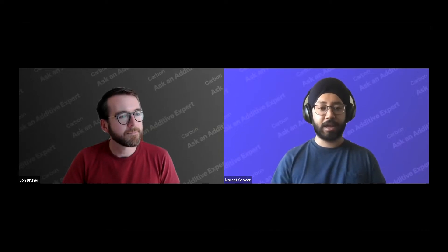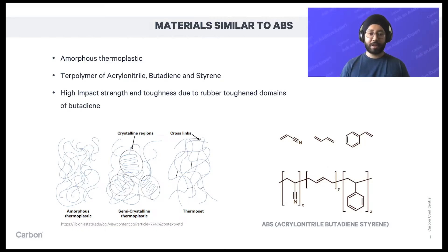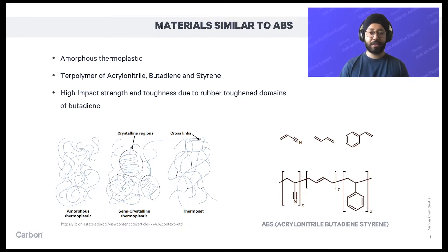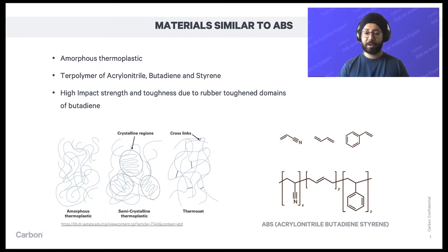ABS comes from the family of polymers known as amorphous thermoplastics. If you look at the screen, amorphous thermoplastics are basically long chains of polymers — essentially like a full bowl of spaghetti. The longer the chains are, the more entanglement you see, and that gives the property set to the materials. Usually 3D printing materials are thermosets, where they're cross-linked, and you get a very different set of properties from them.